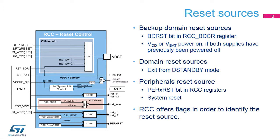STM32H7 X3, X5, and X7 devices embed an ultra-low-power 32 kHz RC oscillator (LSI), which is available in all modes except VBAT mode. The LSI can be used to clock the RTC, UARTs, the low-power timers, and the independent watchdogs. The accuracy of the LSI is plus or minus 1.8%. The LSI consumption is typically 130 nA.